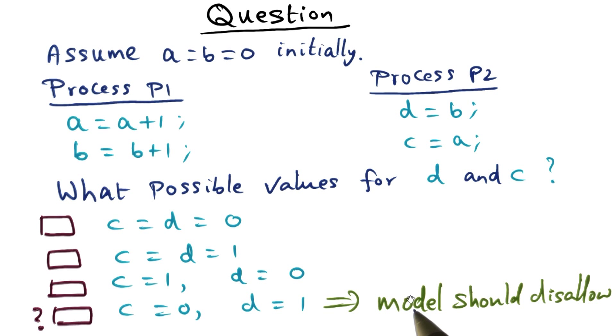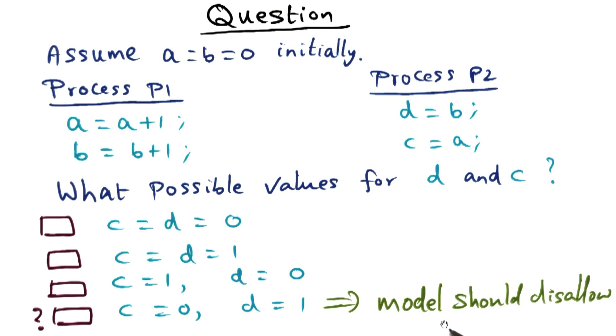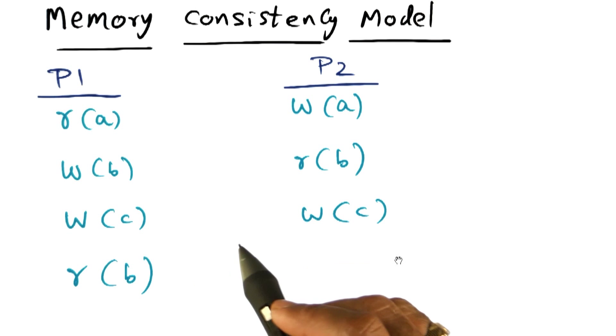So when we talk about memory consistency model, we are saying what is the contract between the programmer and the system? And what we are saying through this example is that this particular outcome is counterintuitive and therefore the model should not allow this particular outcome to be possible in the execution. And this is the reason why you have memory consistency model.